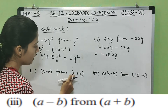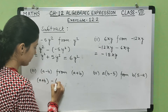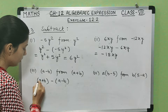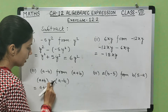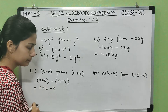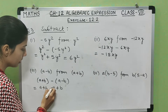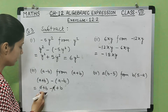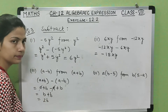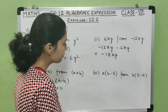Now the third part: subtract (a minus b) from (a plus b). We write (a plus b) first, then minus (a minus b). Opening the bracket: a plus b minus a plus b. Here plus a and minus a cancel out. The remaining terms are b plus b, which equals 2b. So 2b is the answer.